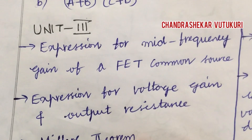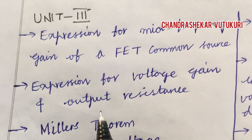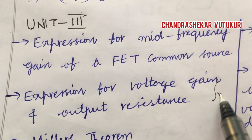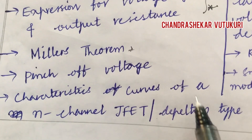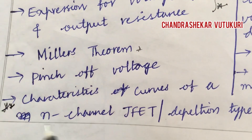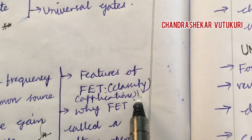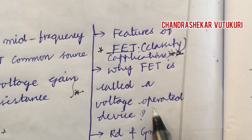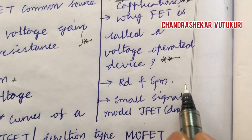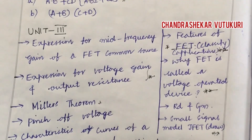Unit 3 covers: expression for the mid-frequency gain of a FET common source amplifier, expression for voltage gain and output resistance, Miller's theorem, pinch-off voltage, and FET characteristics — very important and covered in long questions. N-channel JFET and depletion-type MOSFET, features of FET, classification and applications, why FET is called a voltage-operated device, RD and GM definitions, small signal model of JFET with diagram — these are all Unit 3 questions for Analog and Digital Electronics.